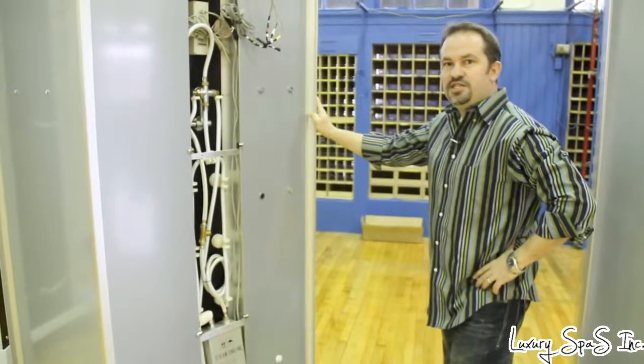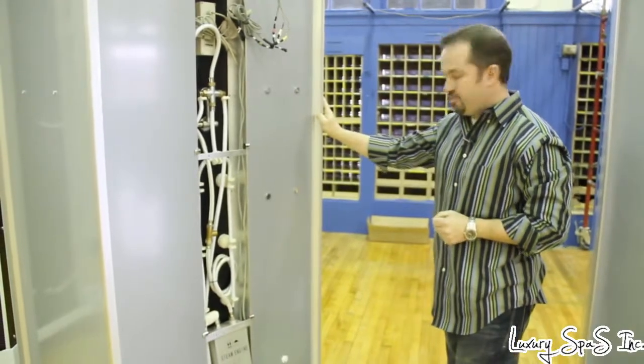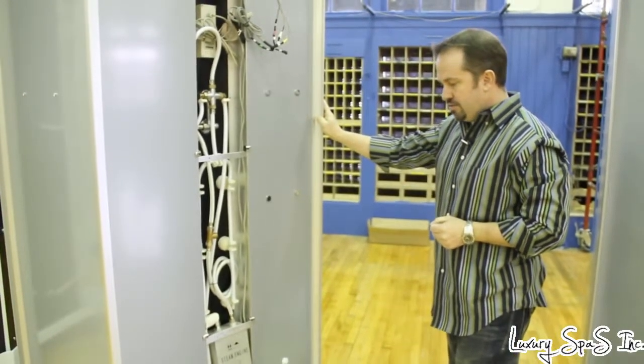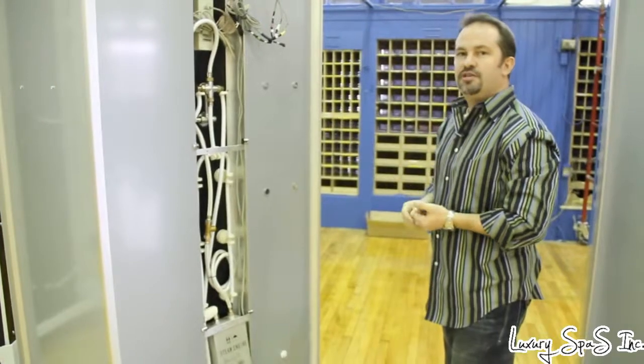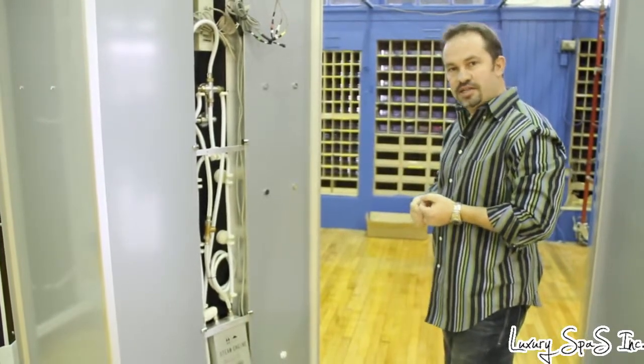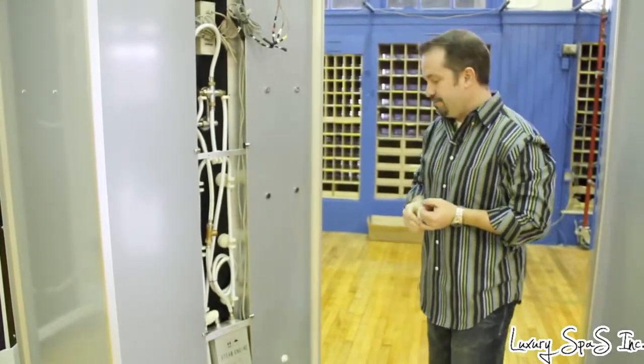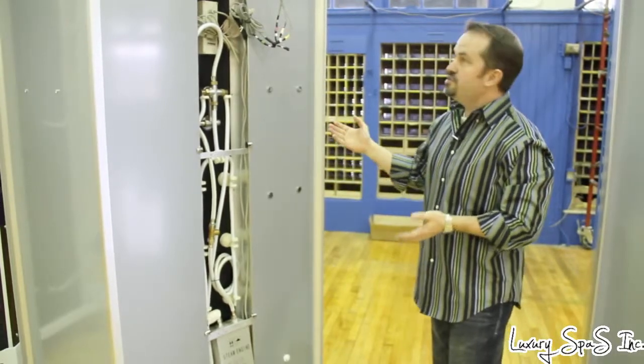Okay, this is the D2 steam shower by Luxury Spas. This unit is prepackaged in four boxes and each box can easily be moved through any door opening. So this is what it looks like once the unit is assembled.